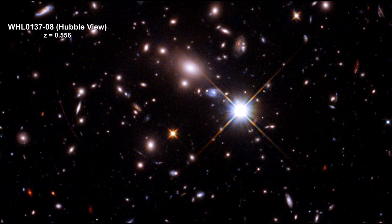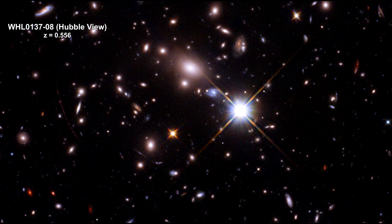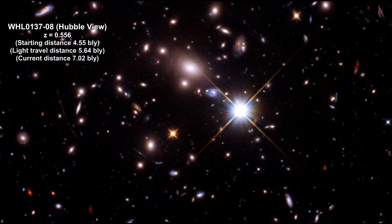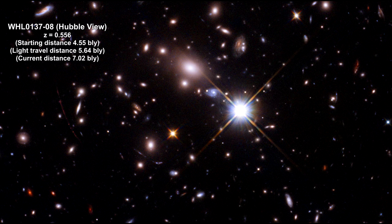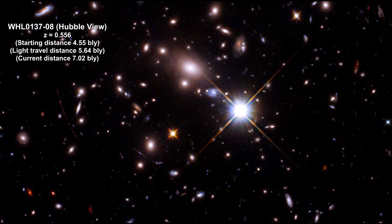Here we have a massive galaxy cluster. It has been studied for over five years since Hubble first captured the image in 2016. The galaxy was 4.5 billion light years away from us when the light we see started its journey. The light traveled 5.6 billion light years to get here, and it's currently 7 billion light years away.